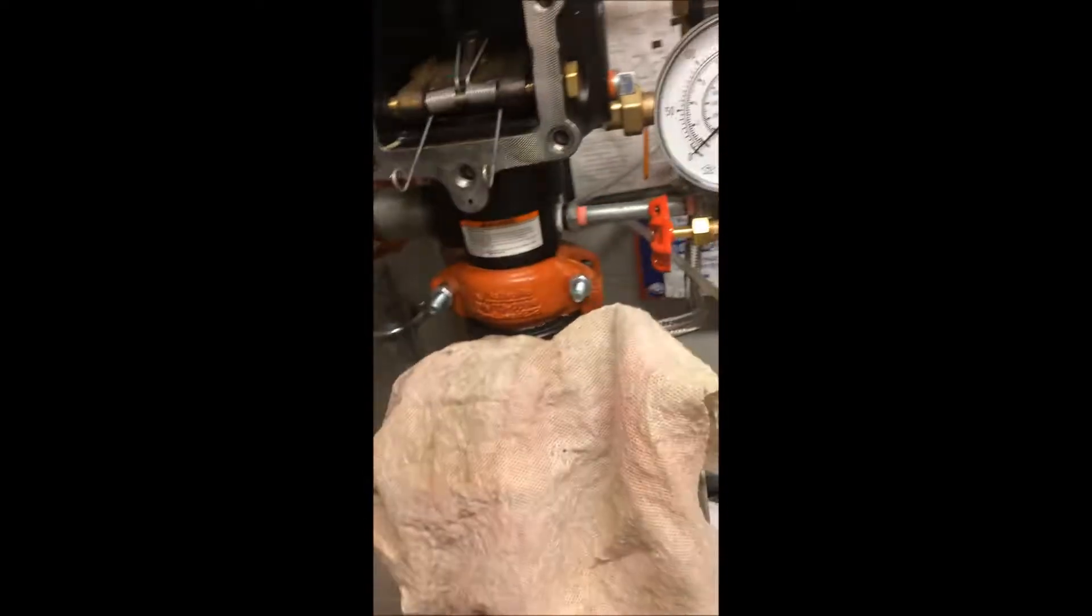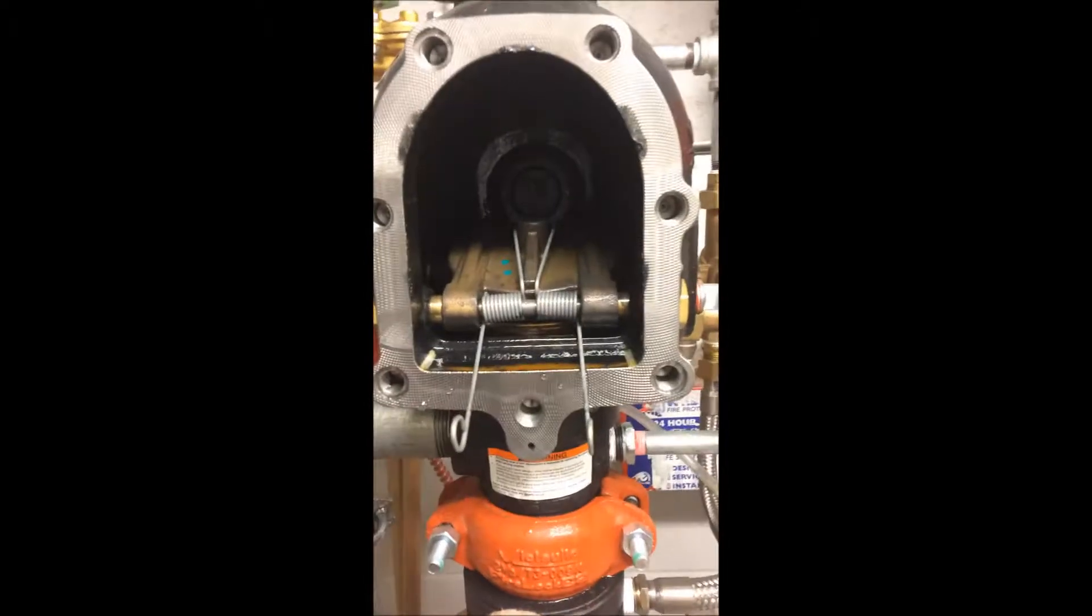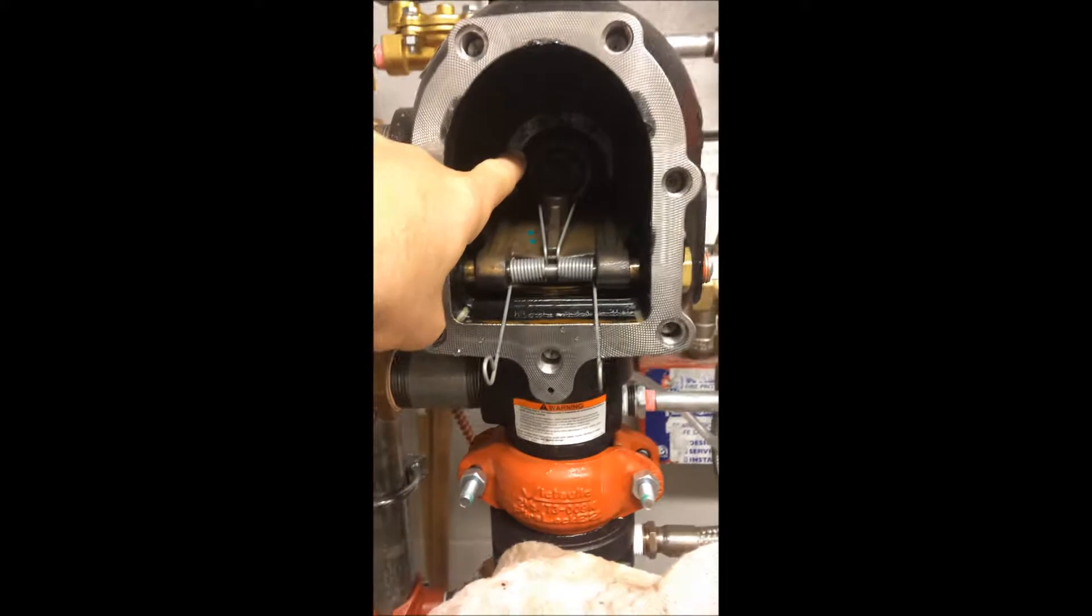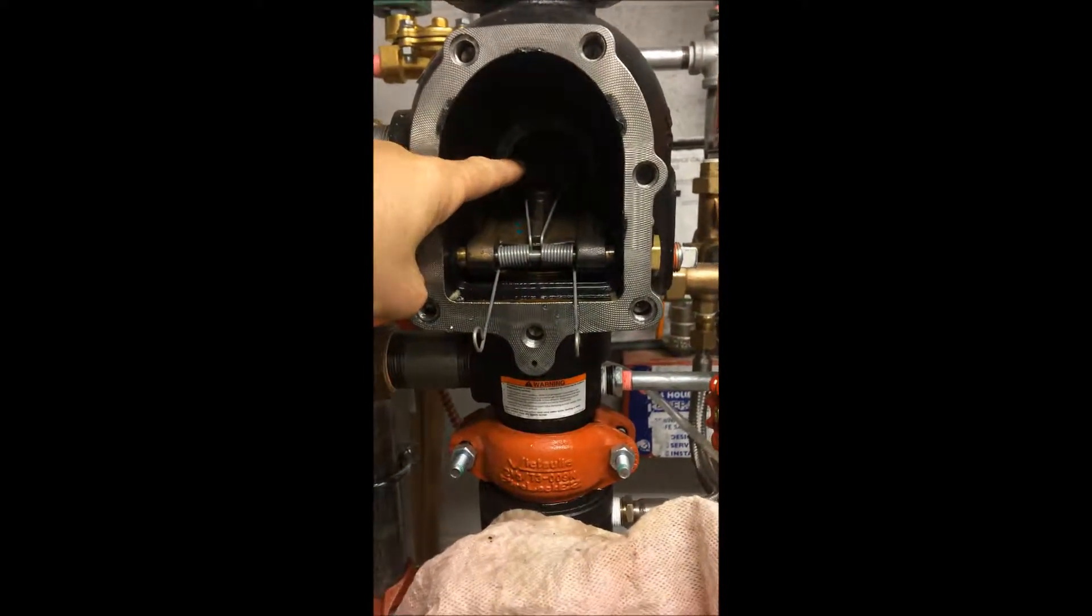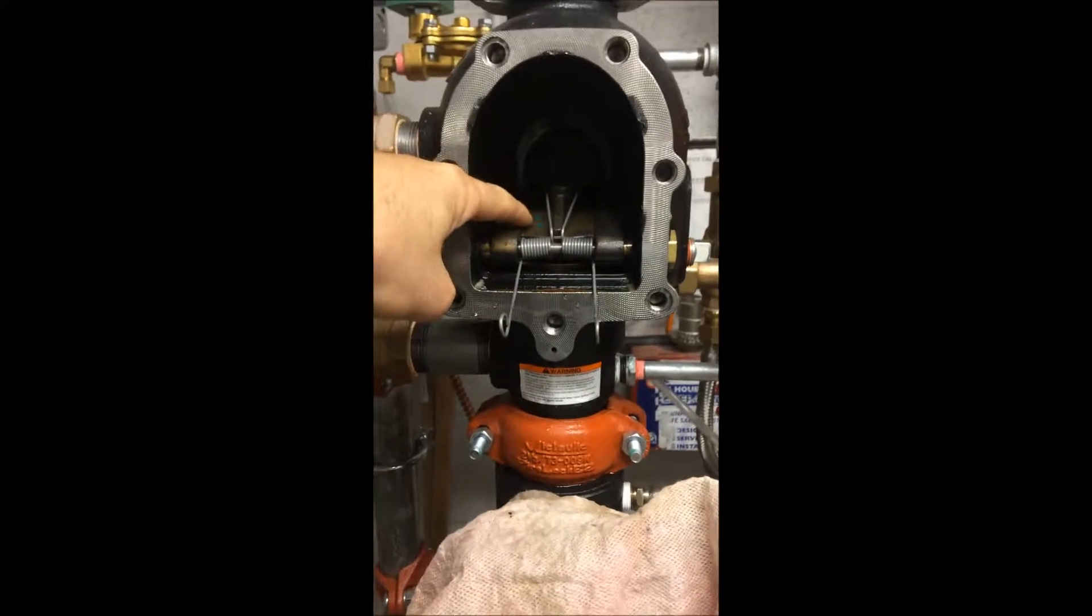It's a deluge valve. And we can go and reset it. And at the back here, it's a diaphragm that fills with water. And it's kind of like on a piston. It comes down and locks the seat into place.